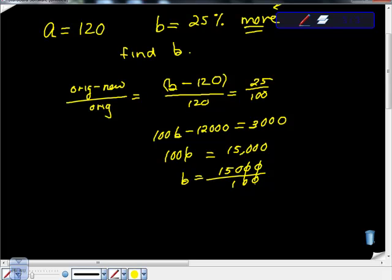I'm going to annex these zeros. They just cancel out, don't they? And I'm going to get that B is equal to 150.